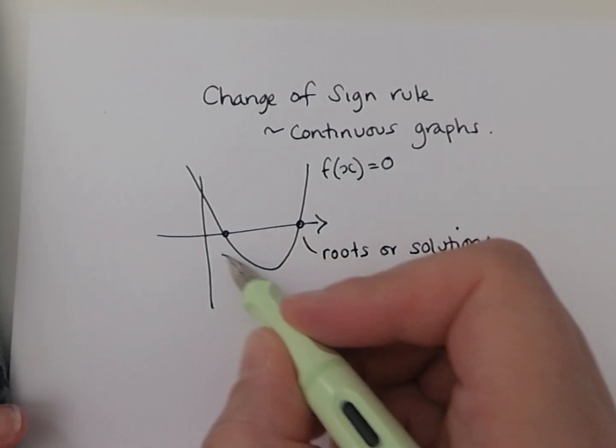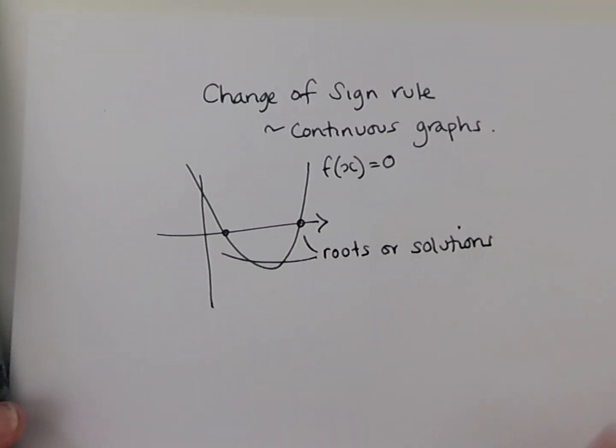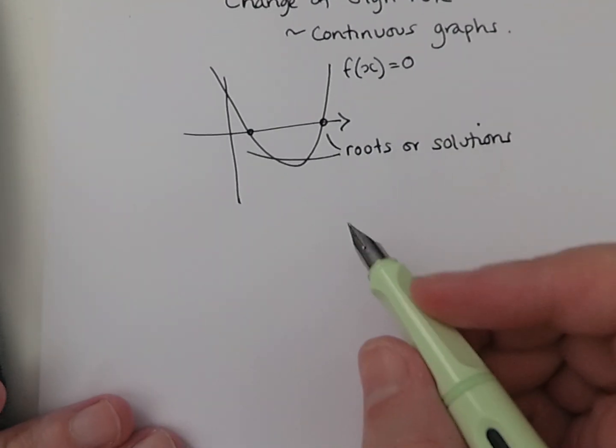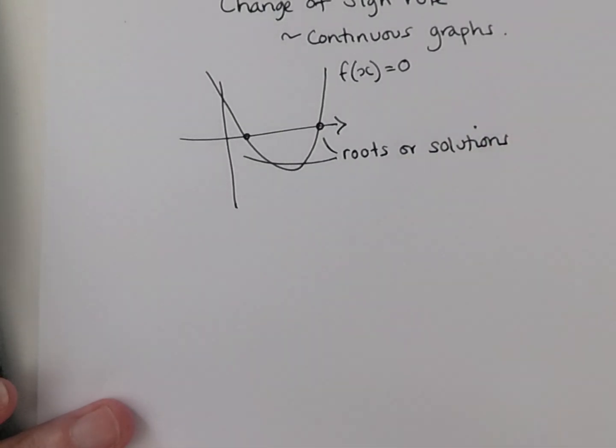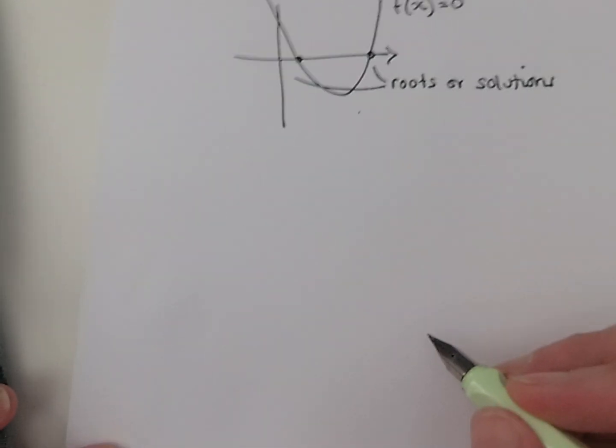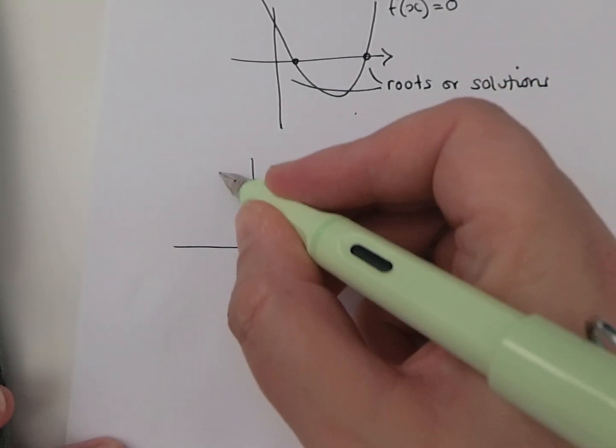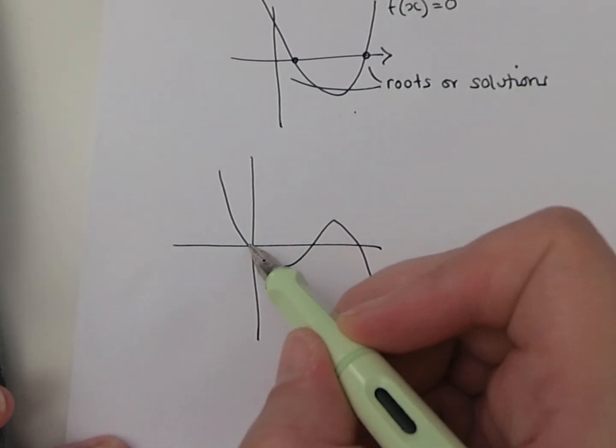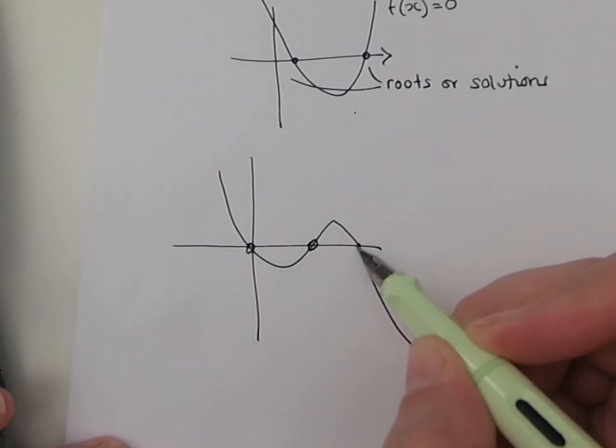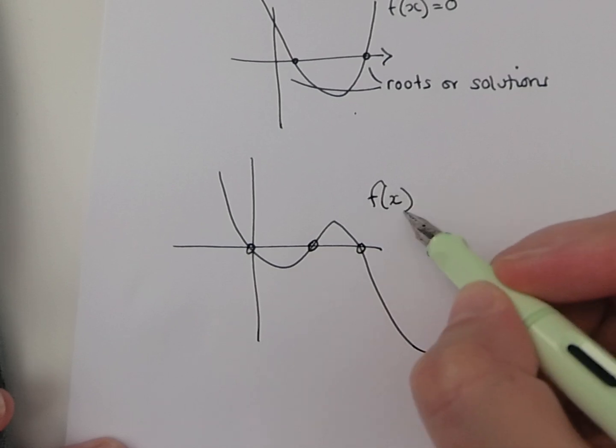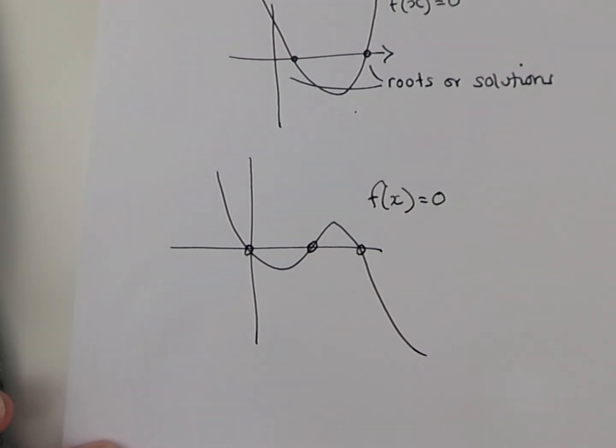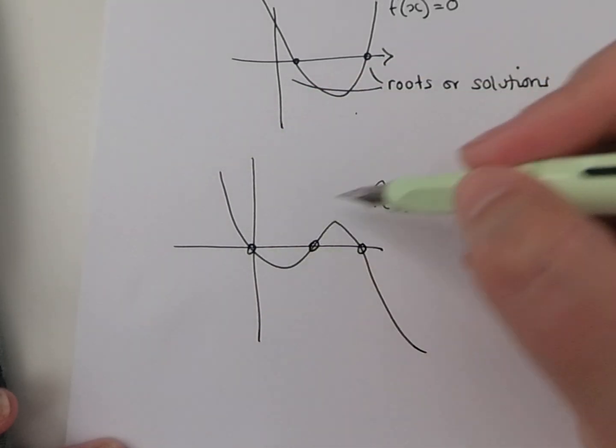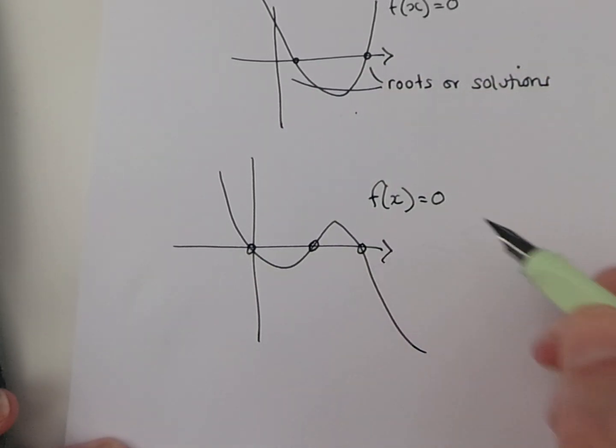Now these are really important in math. They help us solve a variety of things. The same will also be true of any continuous graph. For example, a cubic graph can have up to three roots or solutions when it's equal to zero, and again these solutions occur where the curve cuts the x-axis.